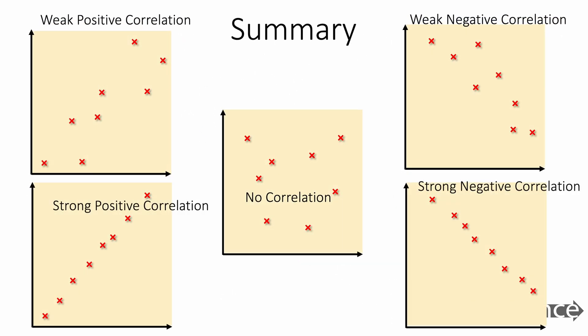To sum up, we've got weak positive correlation, strong positive correlation, no correlation, weak negative correlation and strong negative correlation. In the test, you should be able to describe these correlations using the words strong, weak, positive or negative, or no correlation.